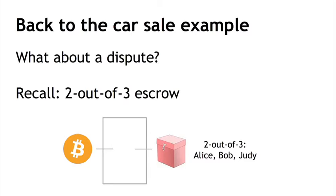The two-out-of-three account has the property that if any two of them agree, they can get the payment out of the intermediate holding address and send it to either the seller if the transaction goes through smoothly, or back to the buyer if there is a dispute and the transaction needs to be reversed — but in no case to the mediator's account; they can't steal the money. This is a pretty good technical solution for dispute resolution.